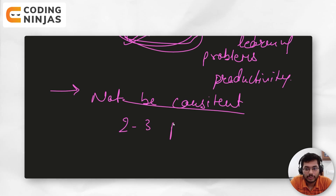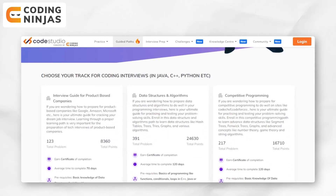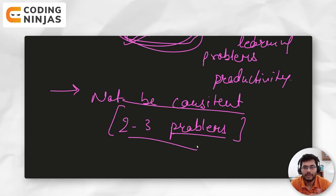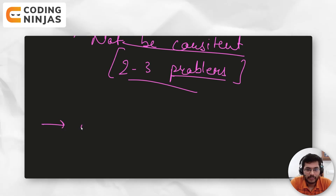How to be consistent: solve two to three problems at least daily — revision problems and new problems from any guided path. Let me tell you about Code Studio by Coding Ninjas — it's a platform that provides a free online code editor and compiler in various languages like Python, Java, and C++. It's a great platform to prepare for coding interviews, with top interview questions, solutions, and guided paths for DSA topics. In a week, aim for at least six days of practice.